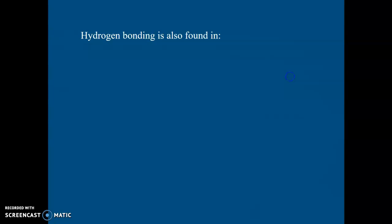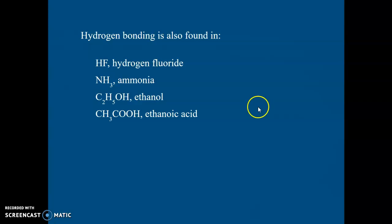Where else do we find hydrogen bonding? Hydrogen fluoride, ammonia. Ethanol also contains hydrogen bonding, otherwise it wouldn't be a liquid. And the same with vinegar, ethanoic acid. That contains hydrogen bonding, otherwise that wouldn't be a liquid. These are all very small molecules. And they have much higher boiling points than you would expect.